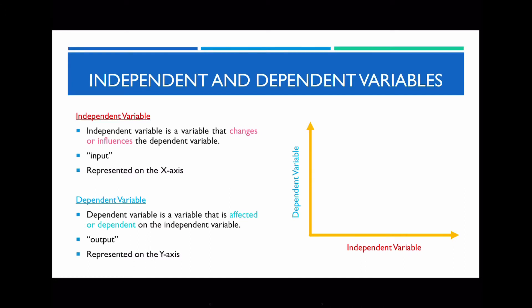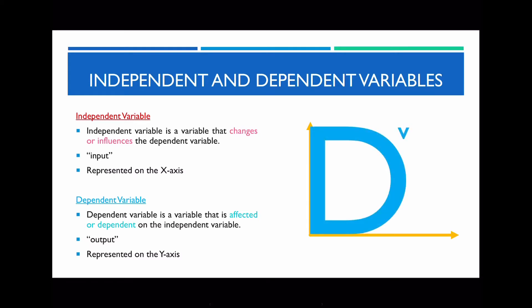It's really important where you actually map out your independent variable and dependent variable, because this is going to affect your answers, especially in later lessons where you need to find the equation of a line of best fit. To help you remember where to plot each variable: you can draw a 'd' along the y-axis to represent your dependent variable, whereas you can write 'iv' if you rotate it along the x-axis. This is a little shortcut to help you remember where to plot your dependent variable versus your independent variable.